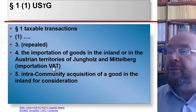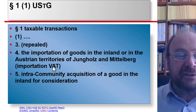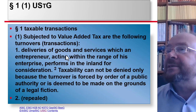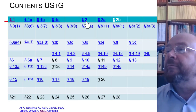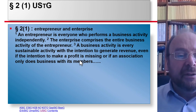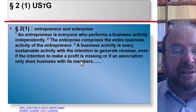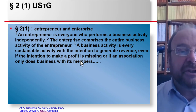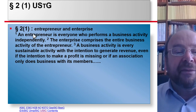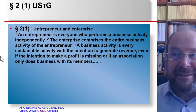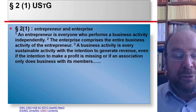For §2: an entrepreneur is everyone who performs a business activity independently, and a business activity is a sustainable activity which aims at revenue. That was correct. And that everything — the main and ancillary activities — belongs to the scope of the enterprise is found in §2(1) sentence 2.